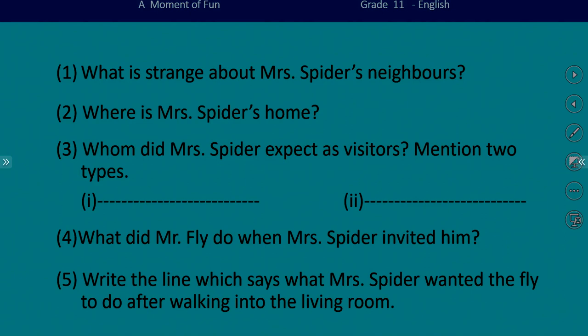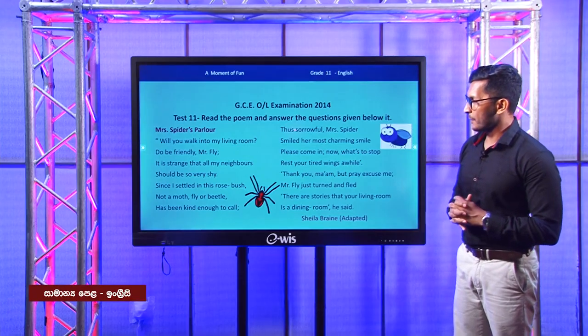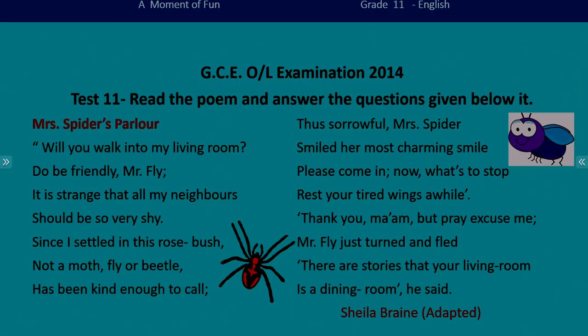See the second question: where is Mrs. Spider's home? In the poem we have the word 'settle' — look at the fifth line: 'since I settled in this rose bush.' So the home of the spider is the rose bush.